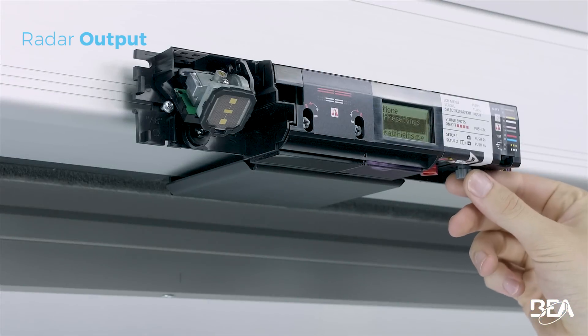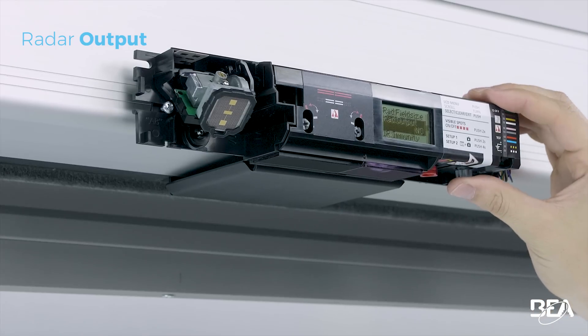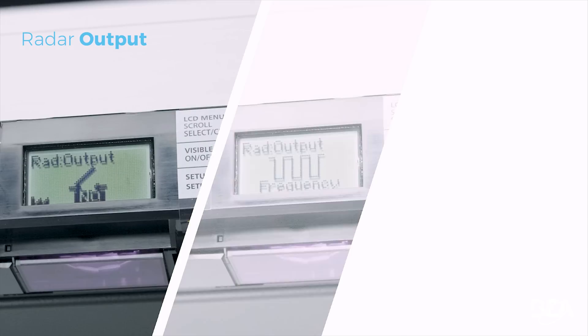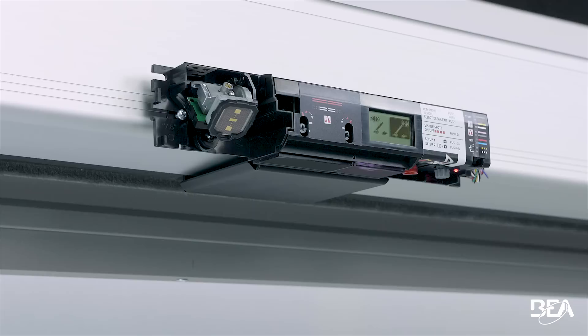In case of emergency exits, enter the LCD menu to adjust the radar output parameter according to your door controller. Select frequency or current and validate your choice by pushing again.